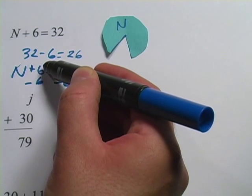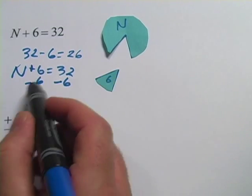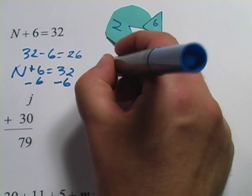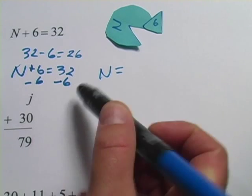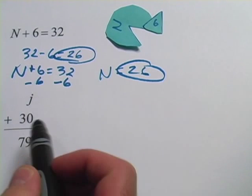Now on this side, a plus 6 minus 6, that comes out to 0. So this side would be N + 0, or just N. So we write that as N equals, and then on this side, we'd have 32 - 6, well that's 26. And that's the answer we came up with the other way.